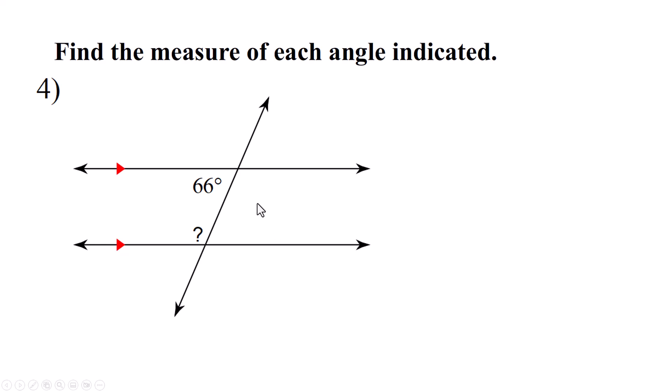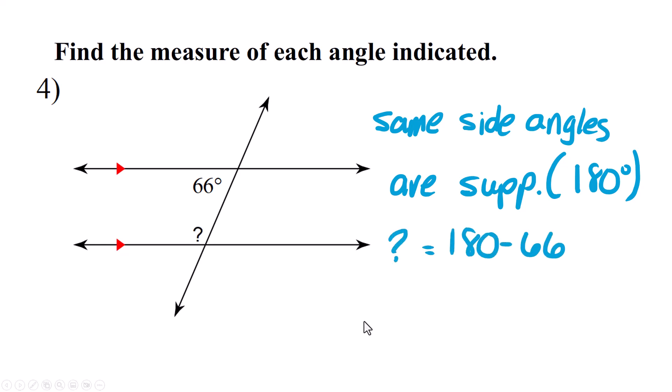All right, find the measure of each angle. All right, this is the one I'm looking for down here. These two are same side. Now, same side angles are supplementary, which means they add up to 180. So, in order to find this missing angle, you're going to need to subtract 66 from 180, and that's 114. So, this angle is 114 degrees.